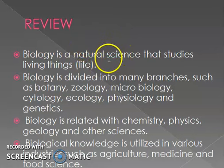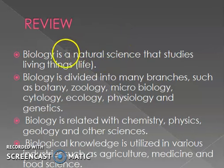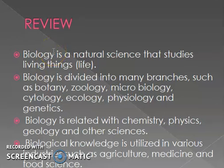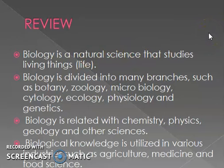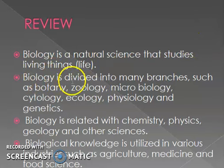Science is generally divided into natural science and social science. Under natural science we have biology, chemistry, and physics. Under social science we have history, economics, business, and others. Biology is divided into many branches.